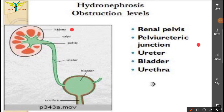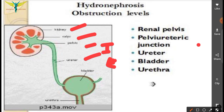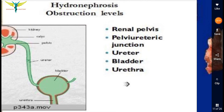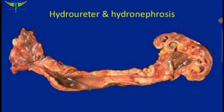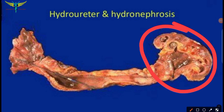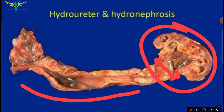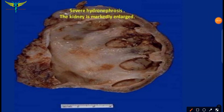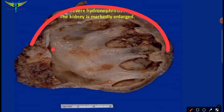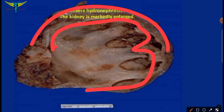The levels of obstruction in hydronephrosis include the kidney, calyx, pelvis, and ureter — where intrinsic and extrinsic factors operate — as well as the bladder and urethra. This is the gross specimen of hydroureter and hydronephrosis. Here you can note the kidney with dilated calyx and pelvis, and the dilated appearance of the ureter. This gross specimen shows a severe hydronephrosis with markedly enlarged pelvis.